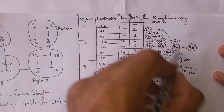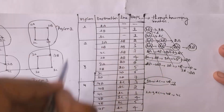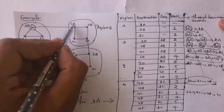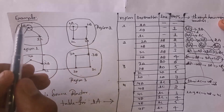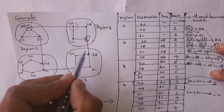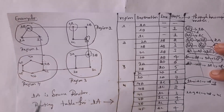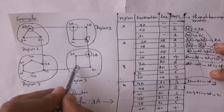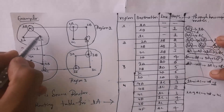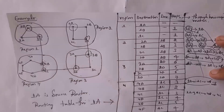In an exam, you just need to draw this table. The gateway routers in this network are: 1B and 2A (connected to each other), 2D and 3B (both gateway routers), 3D and 4C (both gateway routers), and 1C and 4B (both gateway routers). By using these gateway routers, regions can communicate with each other.